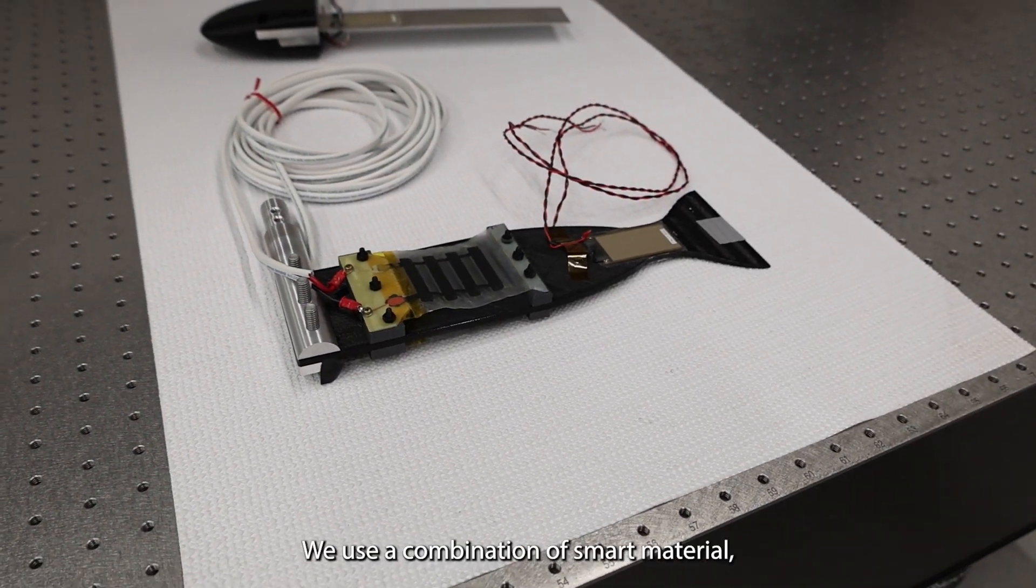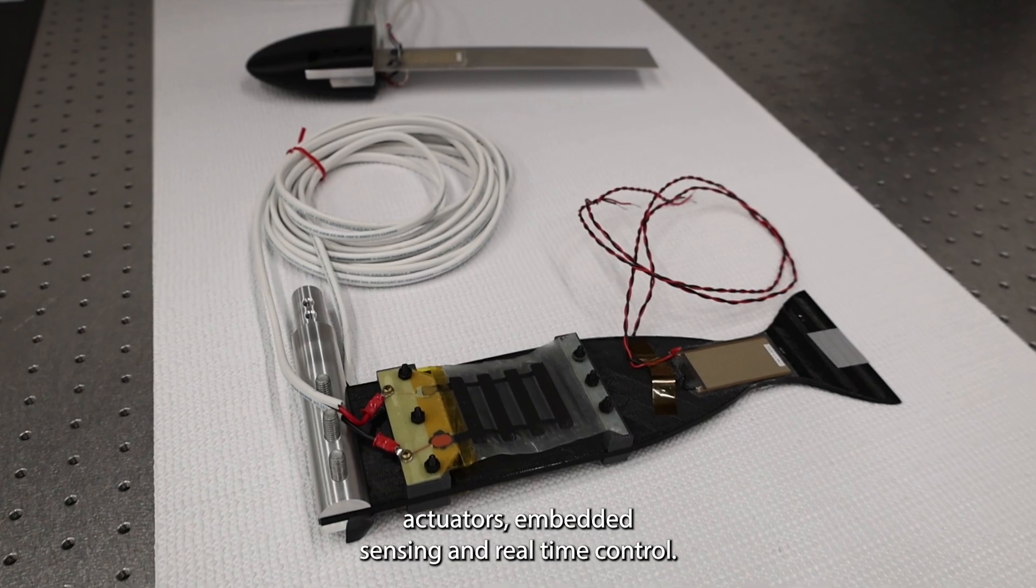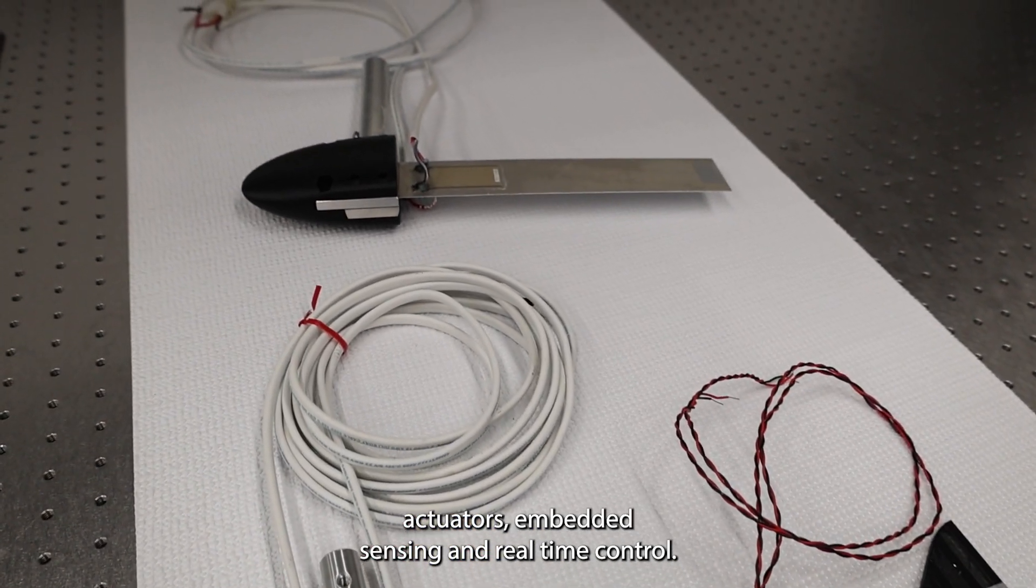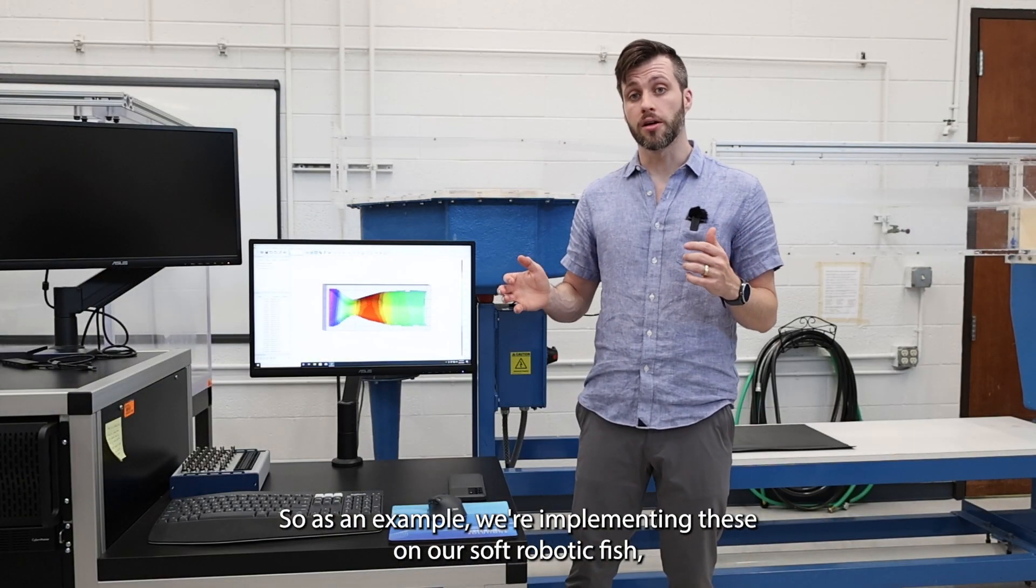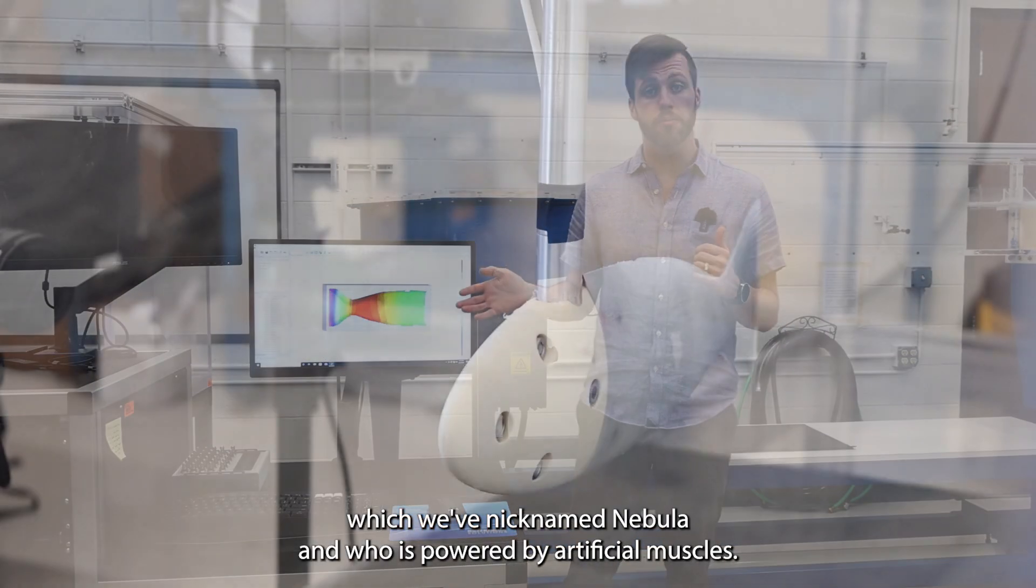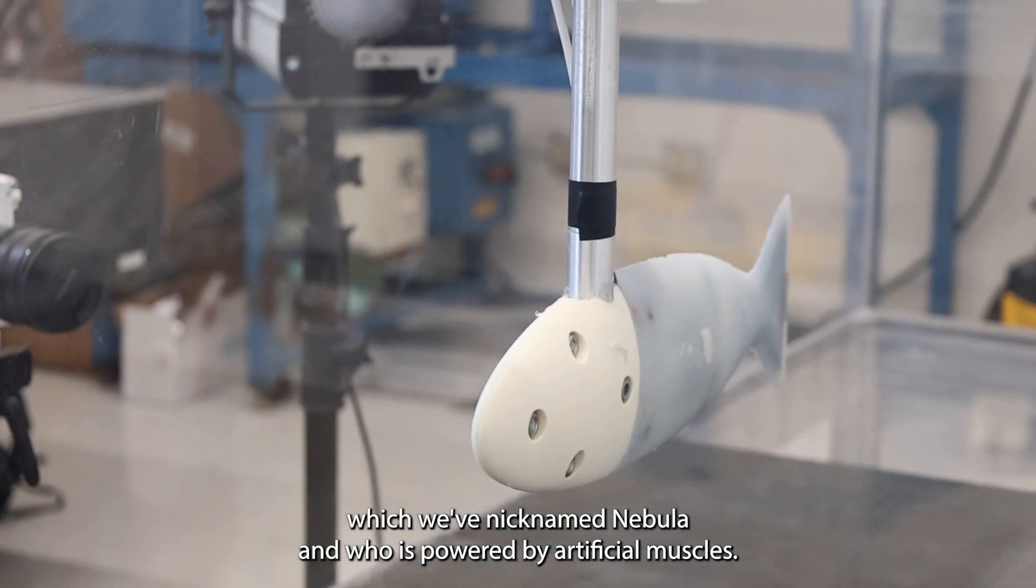To pursue these applications, we use a combination of smart material actuators, embedded sensing, and real-time control. As an example, we're implementing these on our soft robotic fish, which we've nicknamed Nebula, and who is powered by artificial muscles.